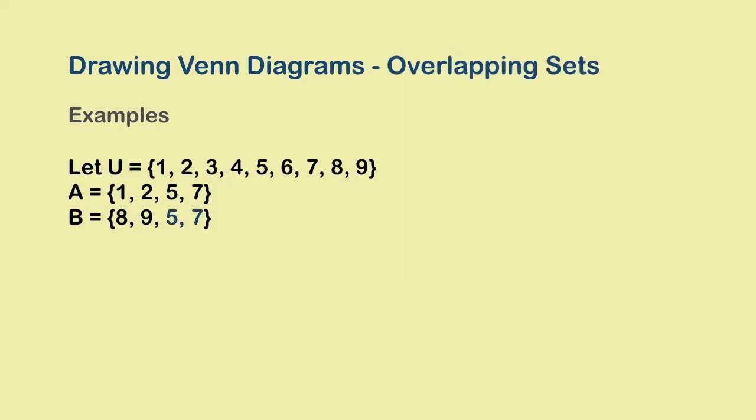Let's say set B also has the elements 5 and 7. With this change, A and B now have two elements in common, and this should reflect in the Venn diagram. Common elements mean common region, which implies an overlap between the two circles.